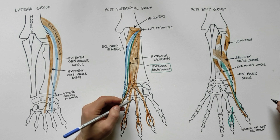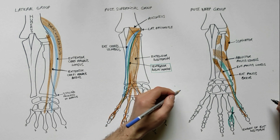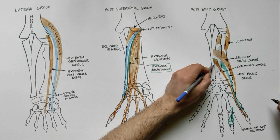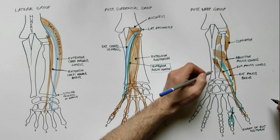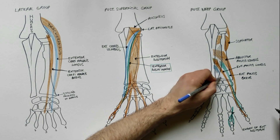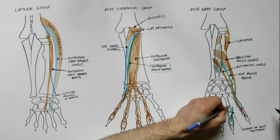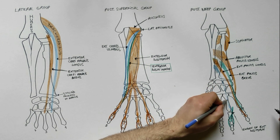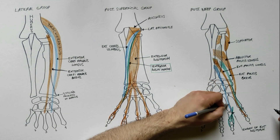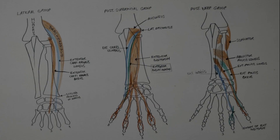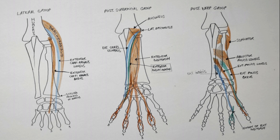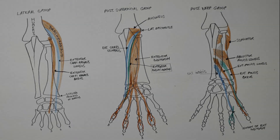The last muscle to be indicated is the extensor indicis. This muscle arises from the posterior surface of the ulna below the origin of the extensor pollicis longus and from the adjoining interosseous membrane. Its tendon fuses with the extensor digitorum tendon for the index finger.